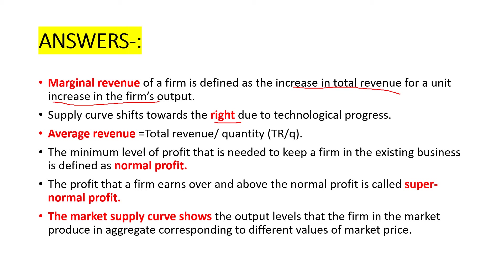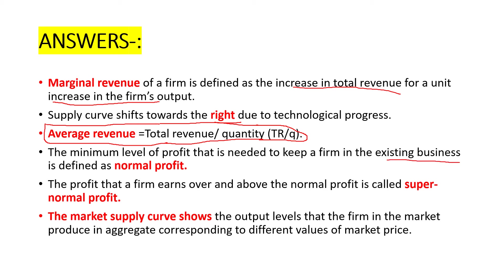The formula of average revenue is total revenue divided by quantity, or TR divided by Q. It is always better to write the full forms as far as possible, and try to avoid writing short forms. What is normal profit? Normal profit is the minimum level of profit that is needed to keep the firm in the existing business.